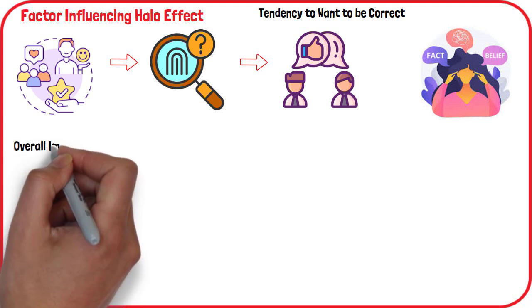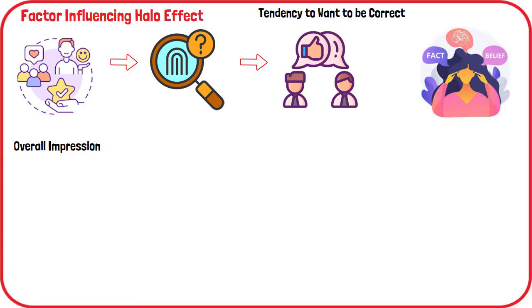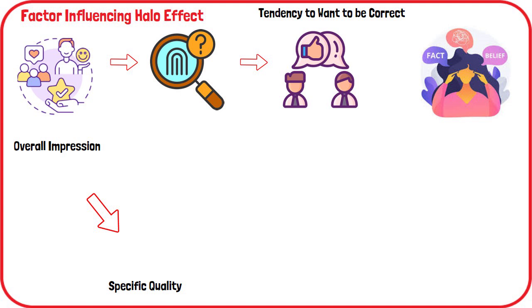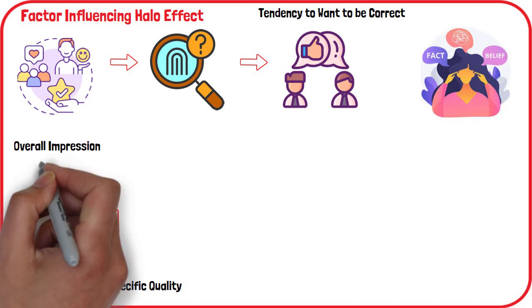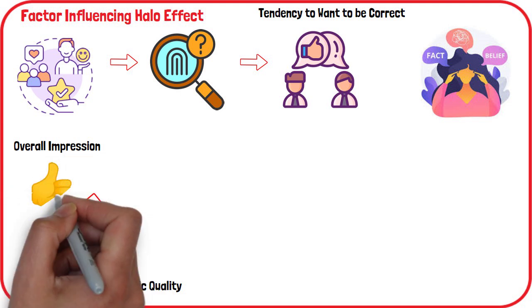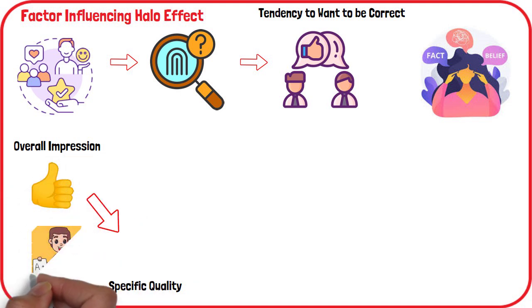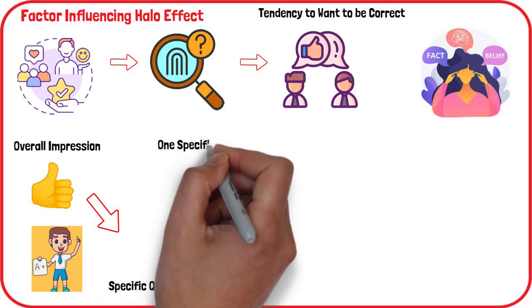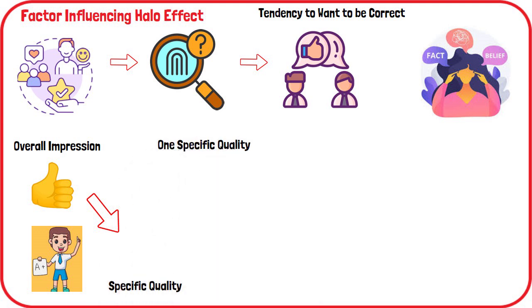Your overall impression of a person impacts your evaluations of that person's specific traits — 'he is nice, he is also smart.' Perceptions of a single trait can carry over to how people perceive other aspects of that person.